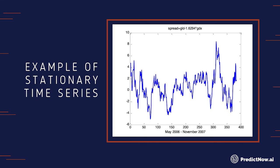The second example is the return of a pair — a portfolio that consists of long one share of GLD ETF and short 1.6 shares of GDX ETF. This is a gold pair, arbitraging between the gold price and the gold miner stocks ETF. But this portfolio is stationary, at least for that period.